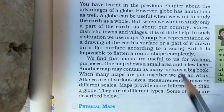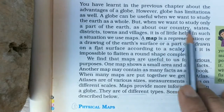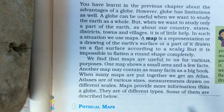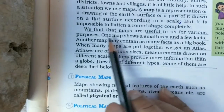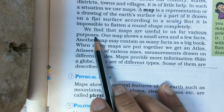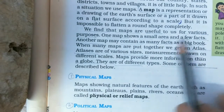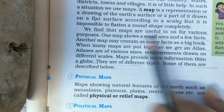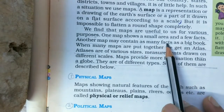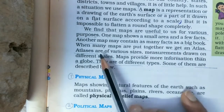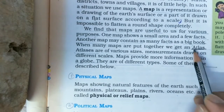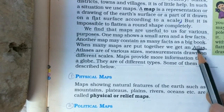Maps are useful to us for various purposes. One map shows a small area and a few facts; another map may contain as many facts as a big book. When many maps are put together, we get an atlas. A collection of maps is known as an atlas. Atlases are of various sizes and measurements, drawn on different scales. Maps provide more information than a globe.